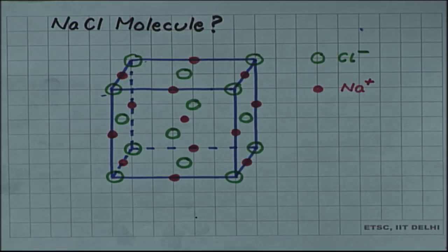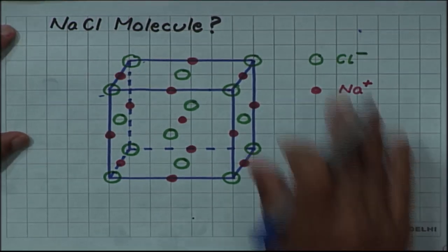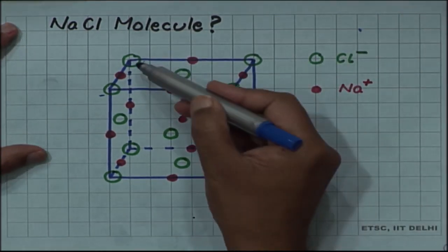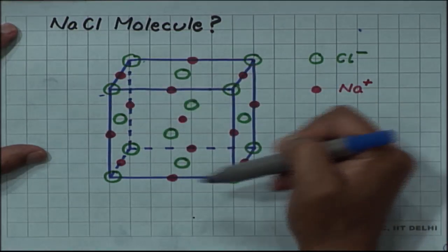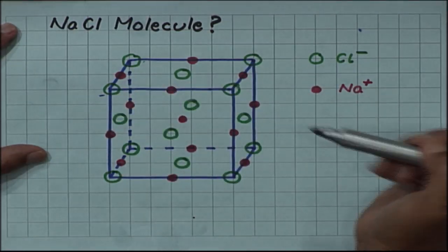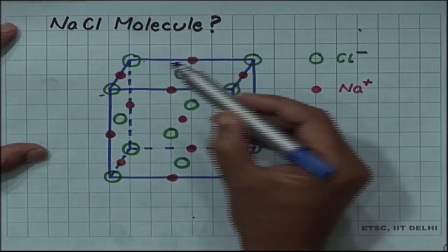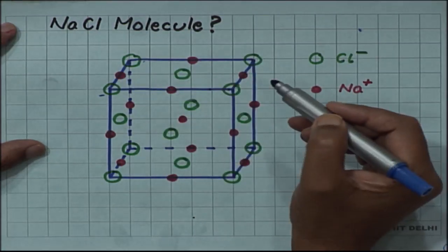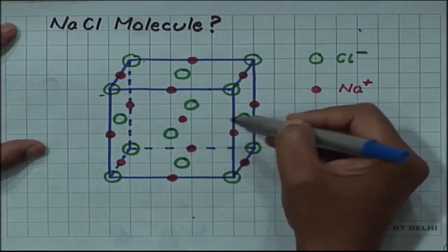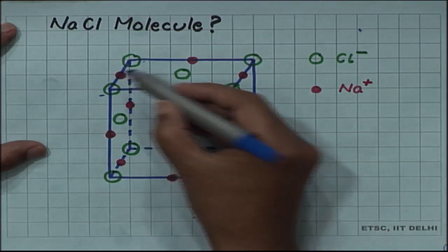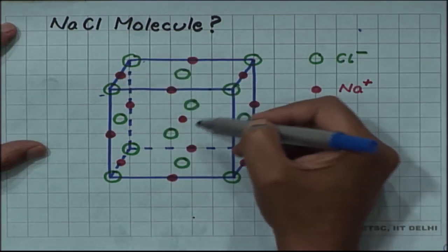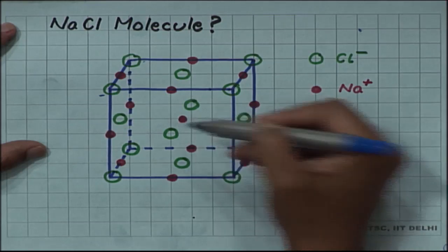As we discussed in the last video, in this structure the chloride ions are sitting at the corners and face centers of a cube, and the sodium ions are sitting in the so-called octahedral void locations, which are at the middle of the edges and at the center of the cube.